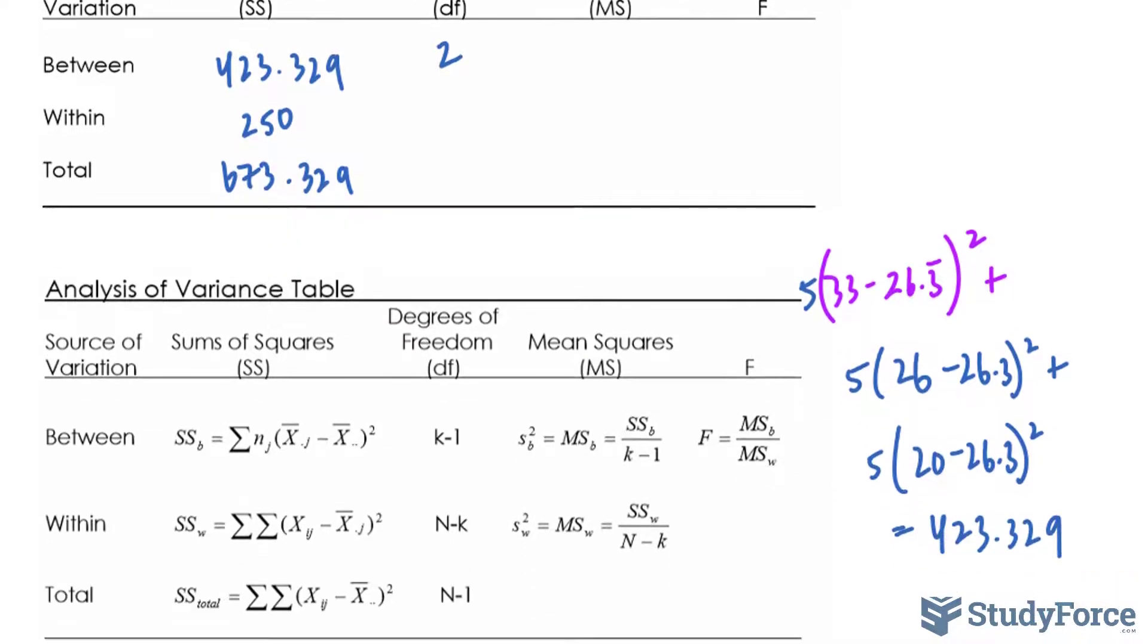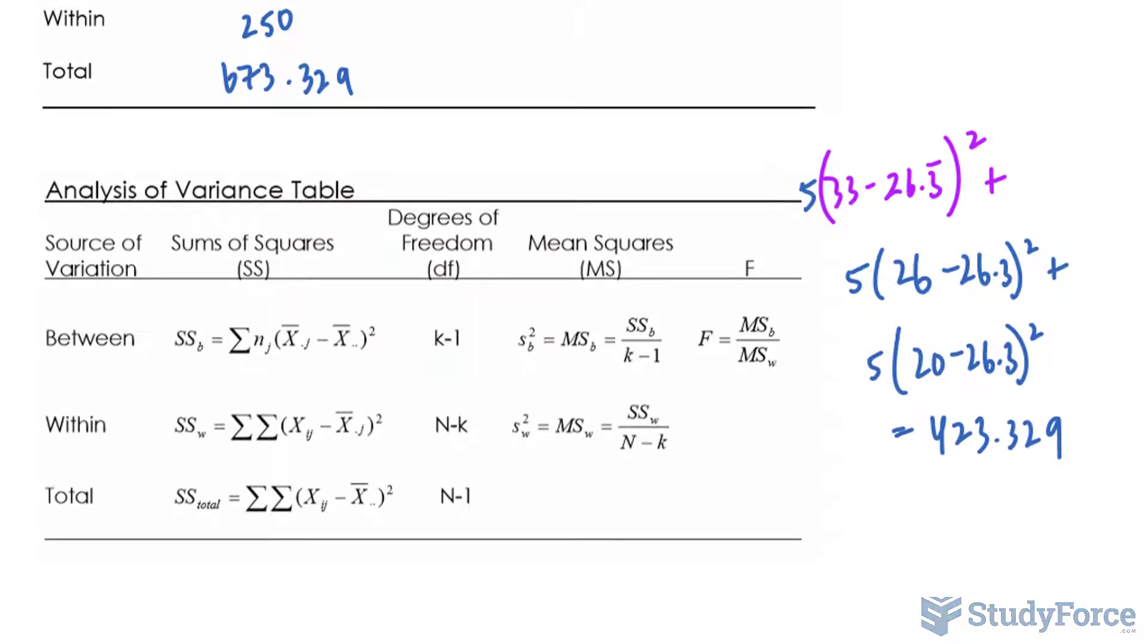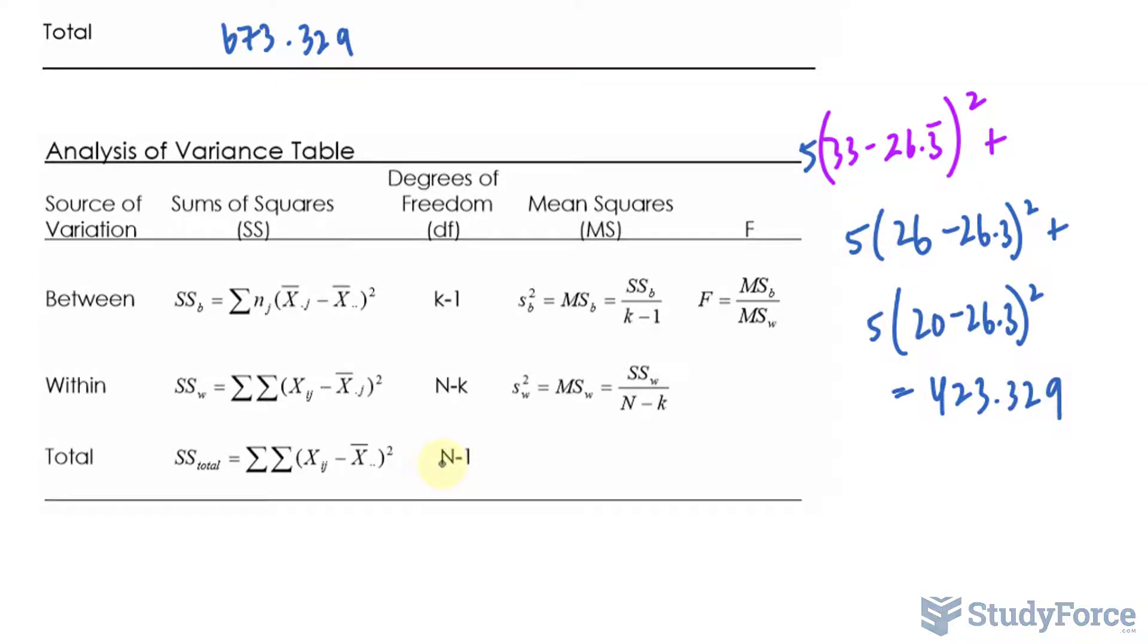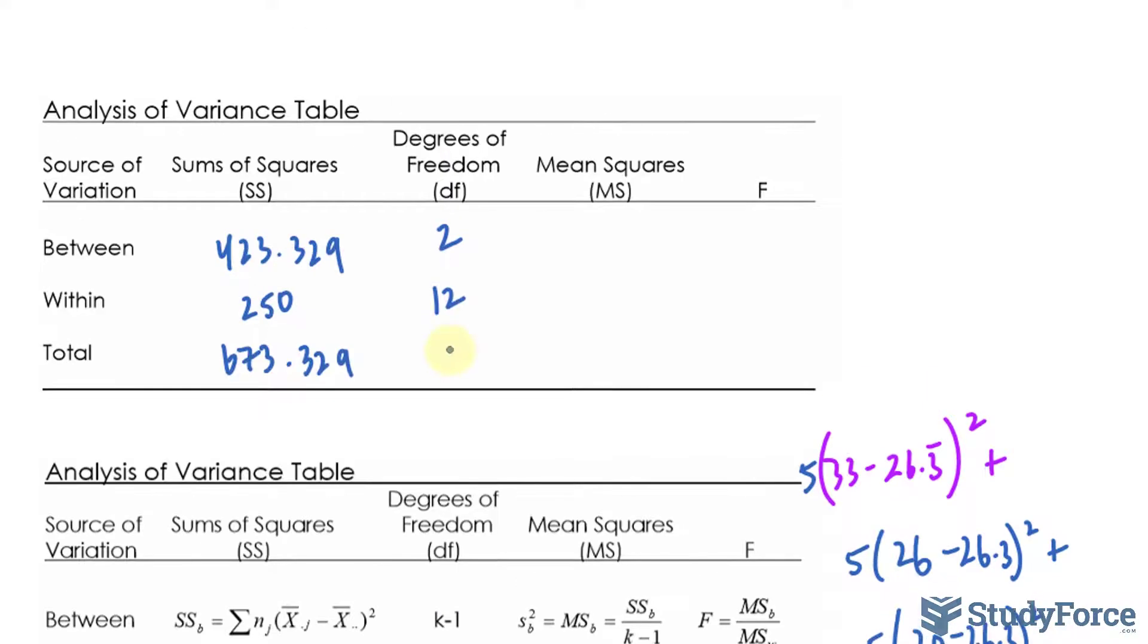To find the degrees of freedom for within, we take the total number of individuals in the study, which happened to be 15, minus the three groups. 15 minus 3 is 12. And the total is n minus 1, which is 14. The rest of this is easy.